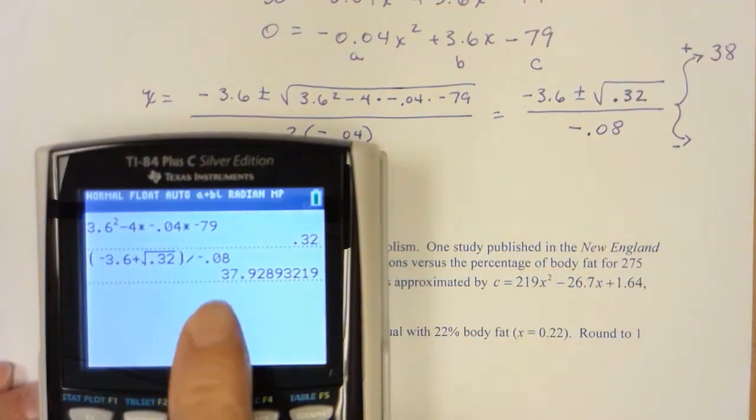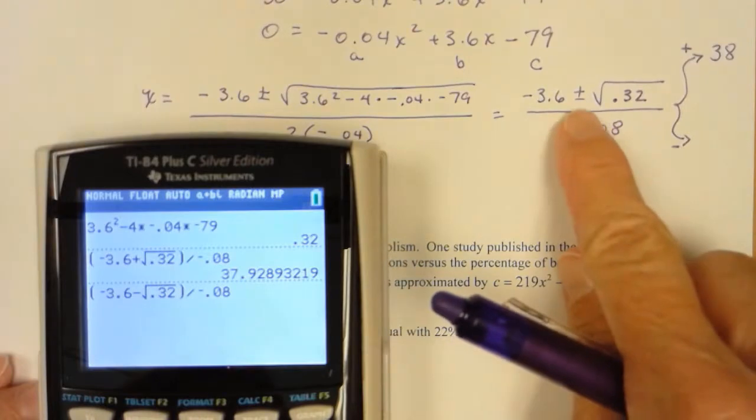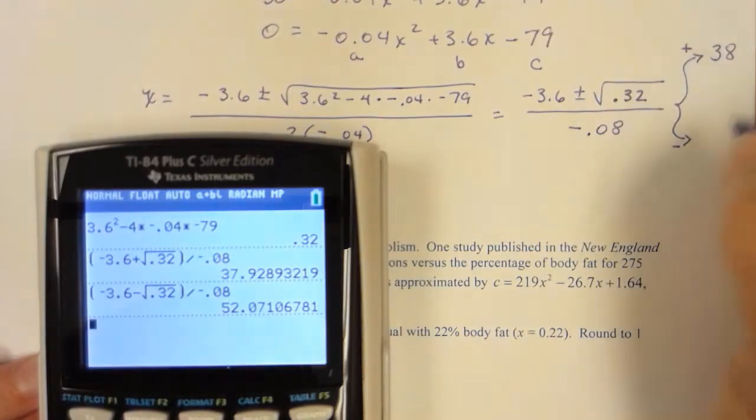Now don't type this all back in. Do a second enter. It repeats it. Go cursor back in, change that to a minus because that's the only difference in this formula. You don't have to cursor out, just press enter. So that looks like that's going to be a 52.